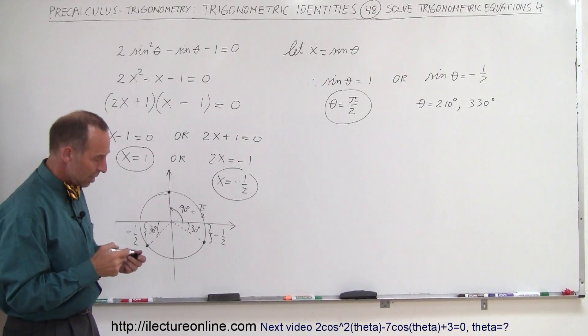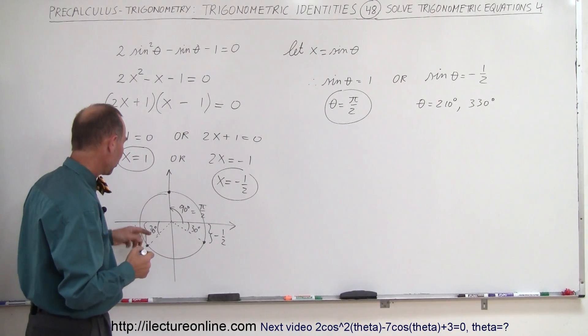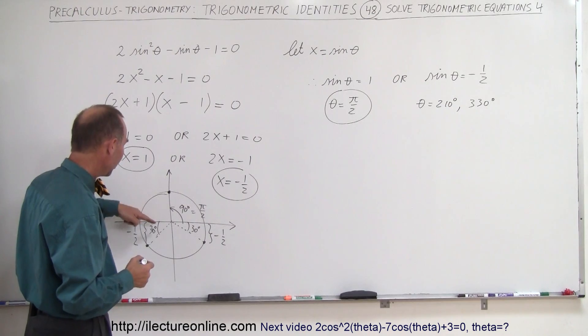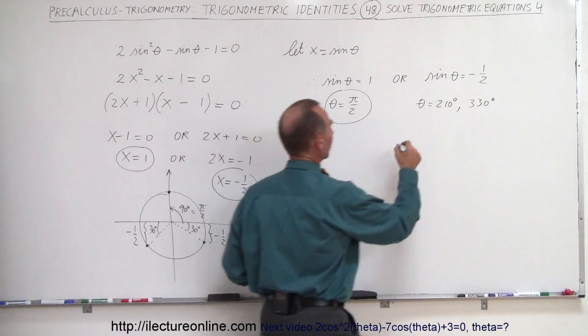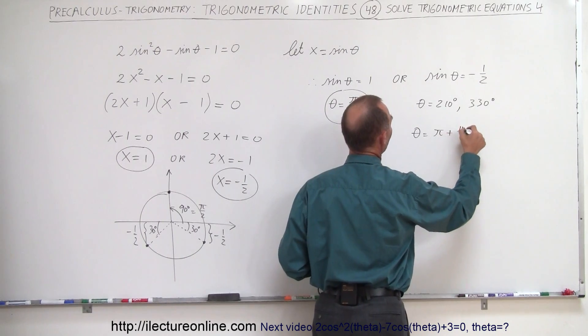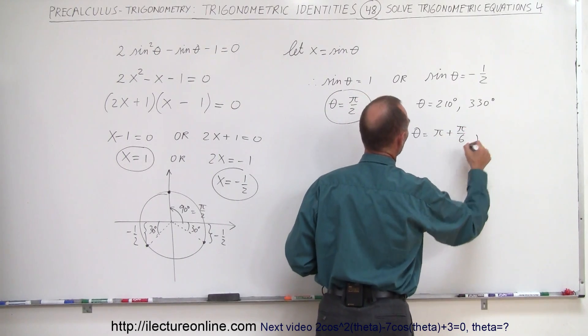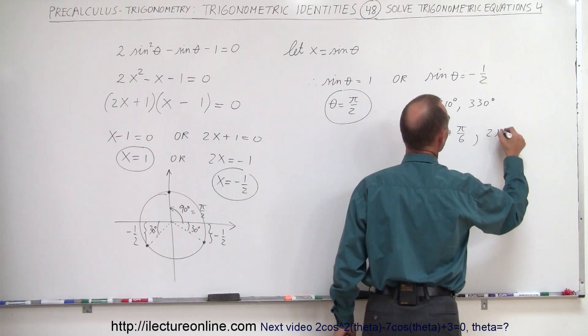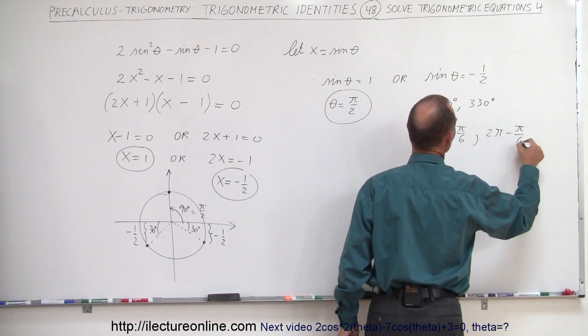But those are the possible answers. So if we convert that to radians, we have pi plus 1 sixth radian. So that means theta is equal to pi plus pi over 6. Or that would be 2 pi minus pi over 6.